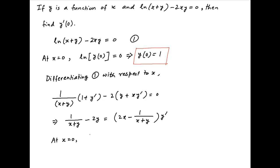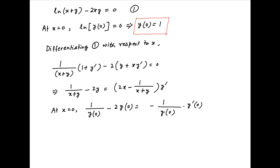At x = 0, this becomes 1/y(0) - 2y(0) = -1/y(0) times y'(0). Now y(0) = 1, determined above.